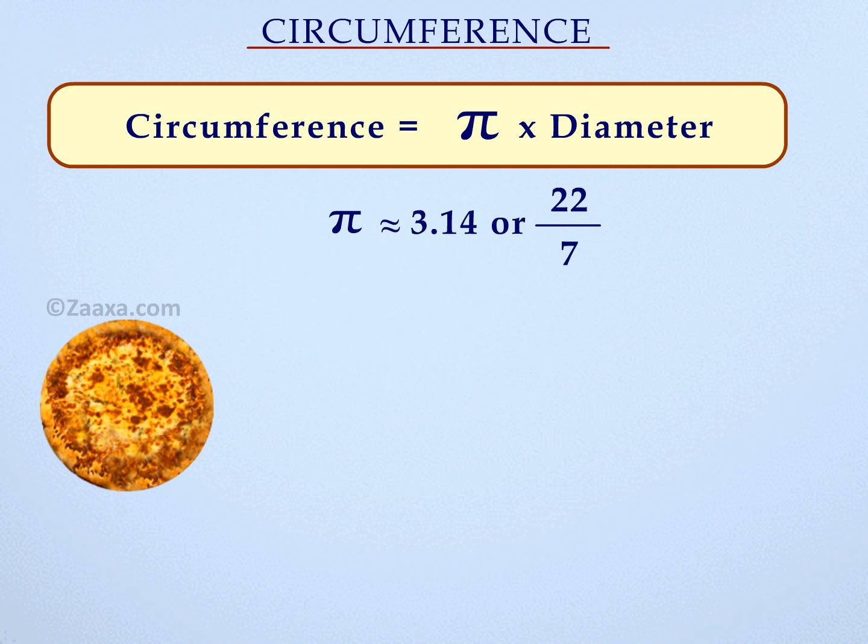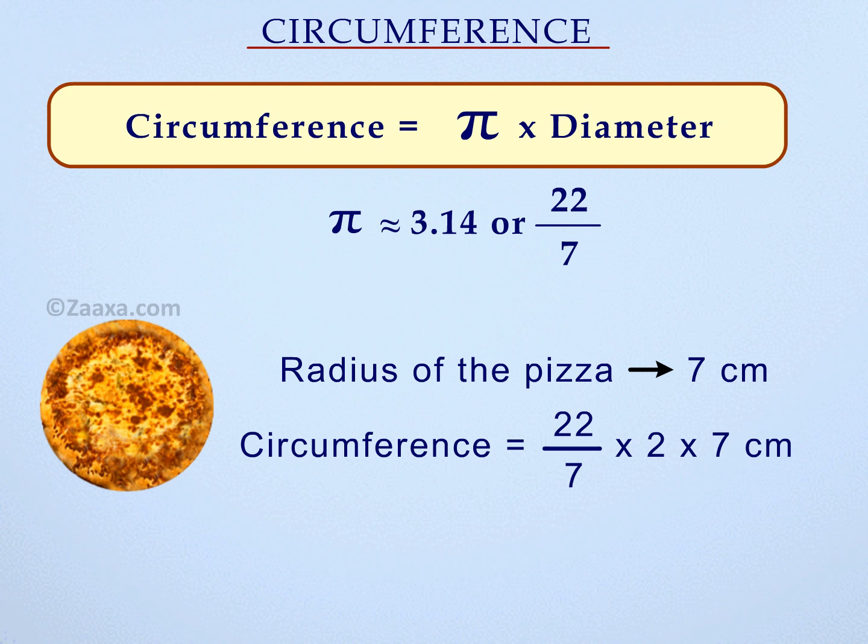Let us find the circumference of a pizza whose radius is 7 cm, taking the value of pi as 22 over 7. We know the circumference of a circle is pi times the diameter of the circle, or 22 over 7 times the diameter of the circle. We know the diameter is 2 times radius. Therefore, the circumference of the pizza is pi times 2 times the radius, giving us the answer 44 cm.